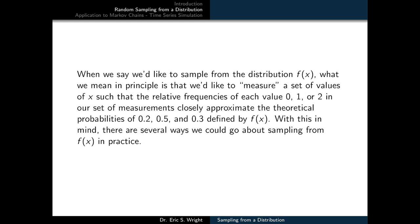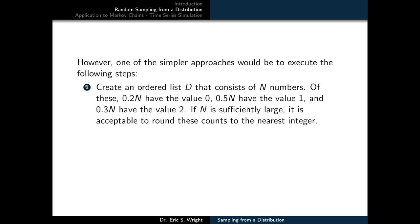With this in mind, there are several ways we could go about sampling from f of x in practice. However, one of the simpler approaches would be to execute the following steps. Create an ordered list d that consists of n numbers. Of these, 0.2n have the value 0, 0.5n have the value 1, and 0.3n have the value 2. If n is sufficiently large, it is acceptable to round these counts to the nearest integer.